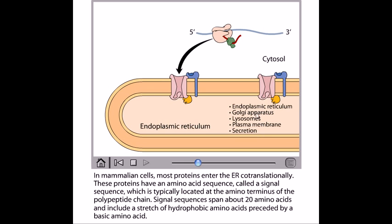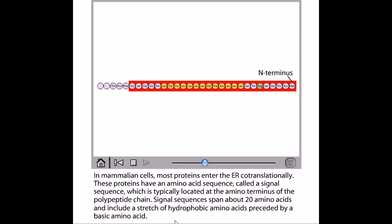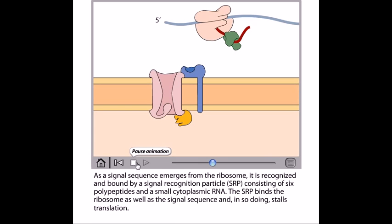So as we can see in this picture, everything is clear. Now in mammalian cells, most proteins enter the ER cotranslationally. That means during the translation process, these proteins have the amino acid sequences called the signal sequence, which is typically located at the amino terminal of the polypeptide chain. Now the signal sequence spans about 20 amino acids as you can see.